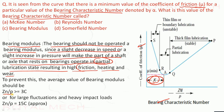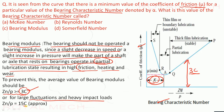To avoid operating at the bearing modulus, the bearing characteristic number is set to about 3C for safe operation. For larger fluctuations or heavy impact loads, it may be set up to 15C to ensure safety. The term is bearing modulus — option C is the correct option.